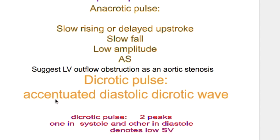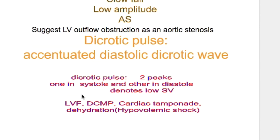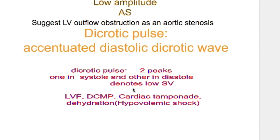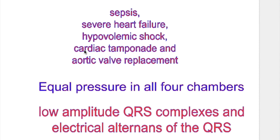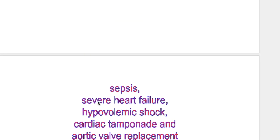The dicrotic pulse has an accentuated diastolic dicrotic wave. It has two peaks — one in systole and one in diastole — and it denotes a low stroke volume. Dicrotic pulse occurs in left ventricular failure, dilated cardiomyopathy, and cardiac tamponade. In cardiac tamponade there is equal pressure in all four chambers, and the QRS complexes have low amplitude with electrical alternans. Non-cardiac conditions for dicrotic pulse are sepsis and hypovolemic shock.